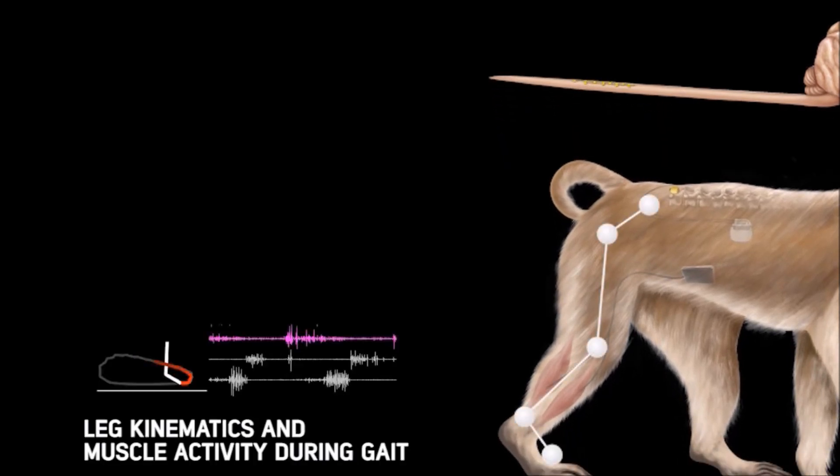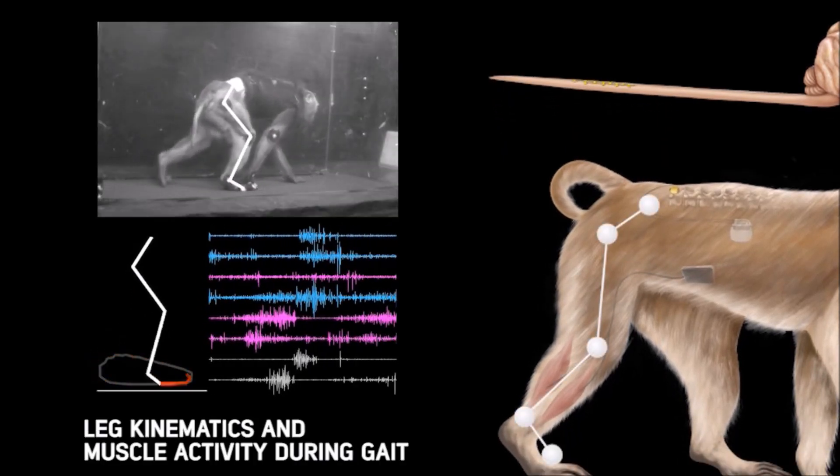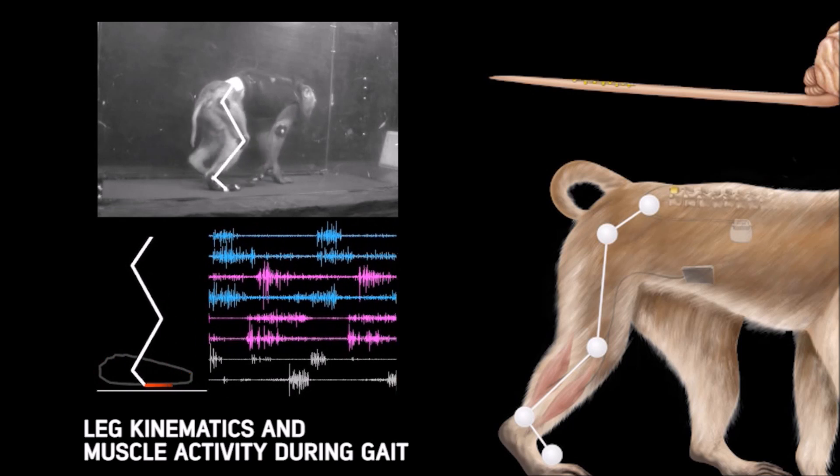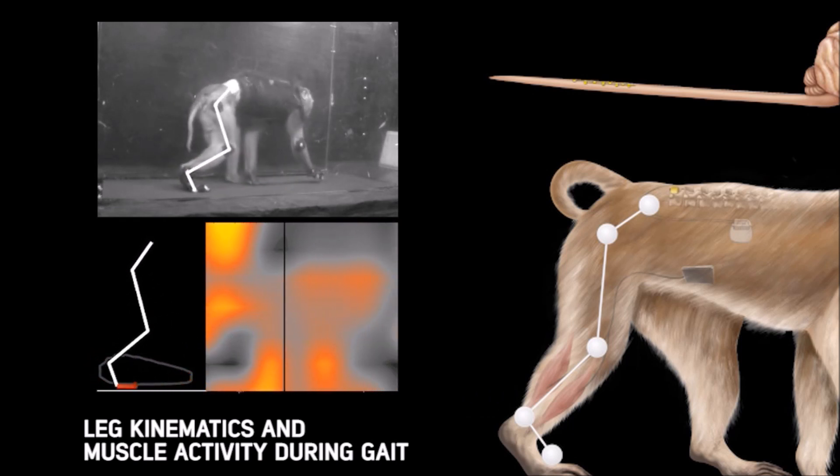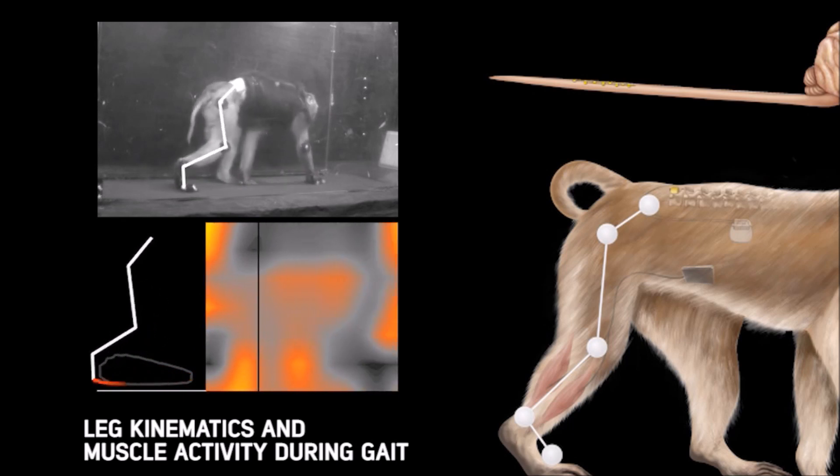We then used wireless technologies to record the activity of these leg muscles in conjunction with leg kinematics, which allowed us to reconstruct the spatiotemporal map of motor neuron activation during locomotion.